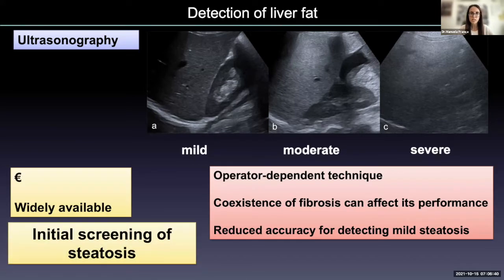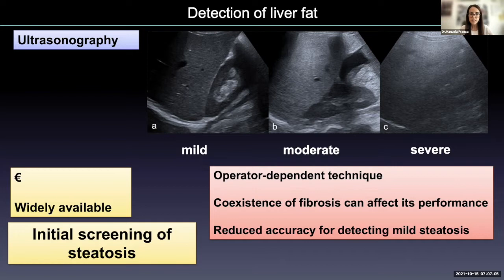Ultrasound is cheap and widely available. However, it is an operator-dependent technique and may be affected by the coexistence of fibrosis, because fibrosis also increases the echogenicity of the liver parenchyma. So it has reduced accuracy for detecting mild steatosis. Nevertheless, ultrasound is still the preferred first-line technique for assessing liver steatosis, mainly in primary care because it is more widely available and cheaper than other imaging techniques.